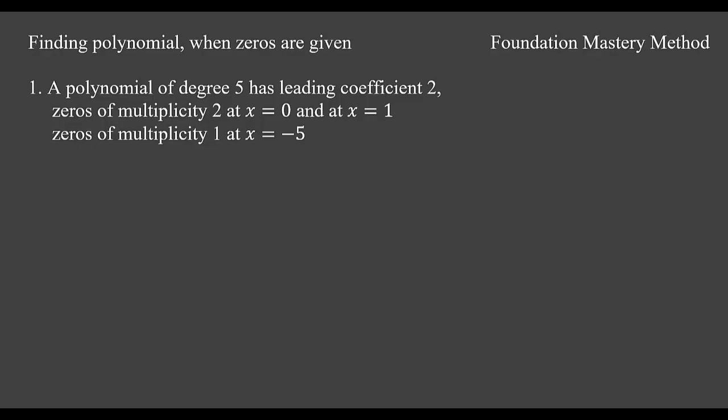So we have our next video on finding polynomial when zeros are given. Now we focus on x equals 0 is a zero, x equals 1 is a zero, and x equals negative 5 is also a zero.